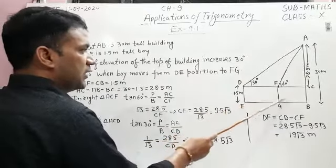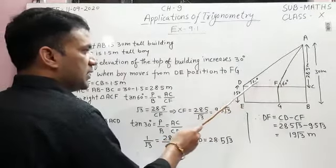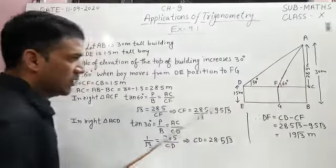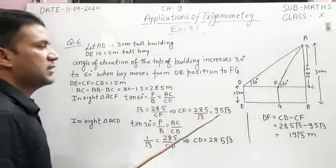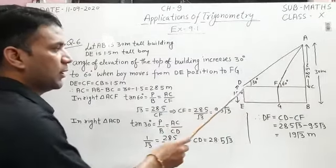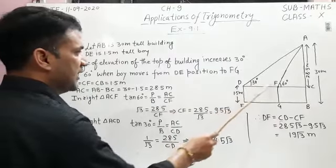the angle of elevation increases from 30 to 60 degrees, and you have to find the distance traveled by the boy towards the building, that is DF.